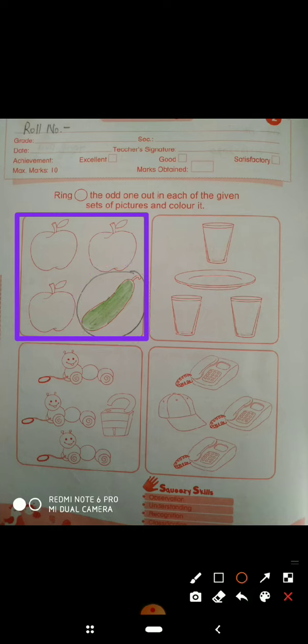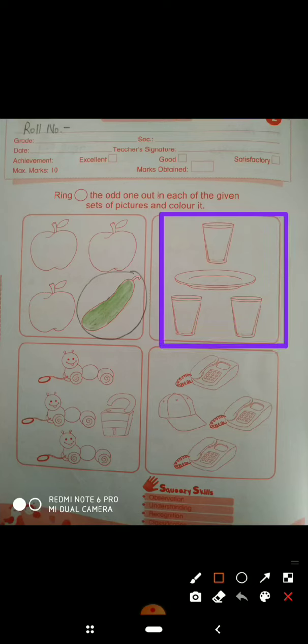Next, here you can see three glasses and one plate. So what is more? Glasses. Plate is one different thing. So what do we have to do? This plate, we have to circle it and whatever color you want, you can color it.